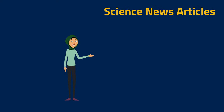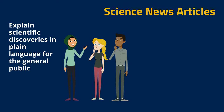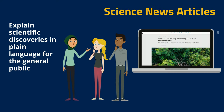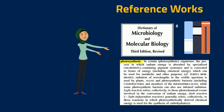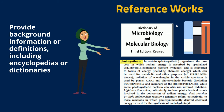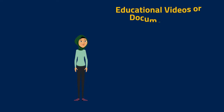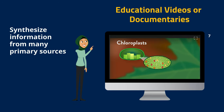Science news articles, written for the general public, explain scientific discoveries in more accessible language. Encyclopedias, dictionaries, and other reference books provide broad overviews and background information on various biological topics. And educational videos or documentaries often synthesize information from multiple primary sources to explain complex topics.